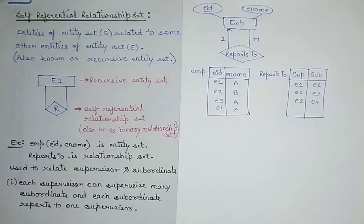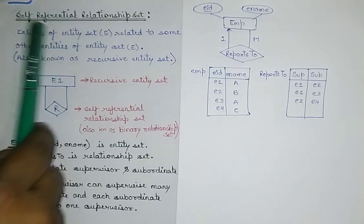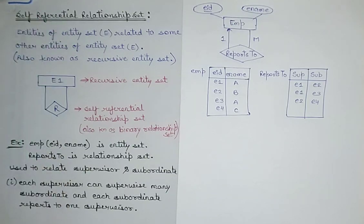Hello friends, welcome to CragGate CSE. In this database series, we are learning the ER model chapter. Till now I have discussed the basics of ER diagram, ER model, relationship set mapping, and how to minimize the ER diagram. There is one small variation which is the self-referential relationship set, and in this video we will be learning about that.